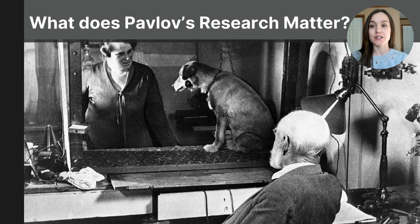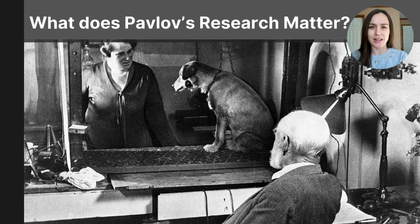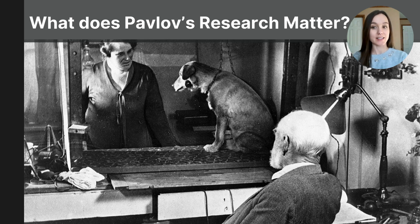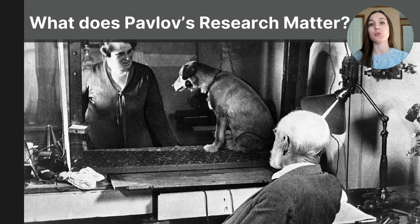In the previous video in this series you learned about the components of classical conditioning through the study of Ivan Pavlov. You learned about the unconditioned stimulus and the unconditioned response, as well as the conditioned stimulus and the conditioned response. You also learned how organisms can develop involuntary behaviors like a reflex to a completely neutral stimulus. In fact, every species tested — from microscopic creatures to earthworms to fish to dogs to monkeys to people — have been able to show that responses like reflexes can be classically conditioned to a once neutral stimulus.